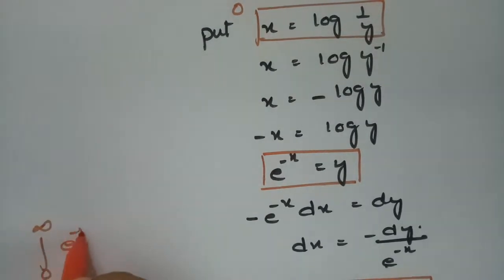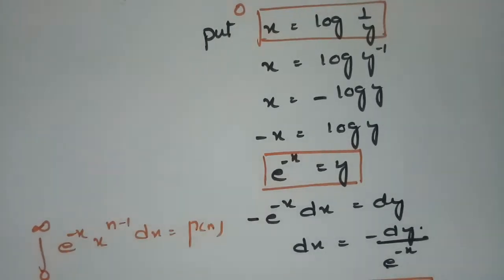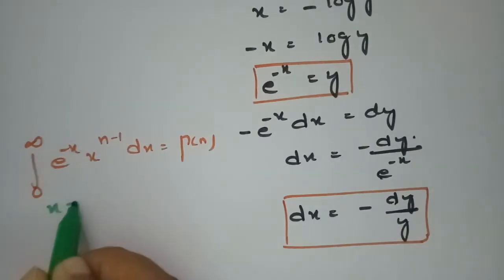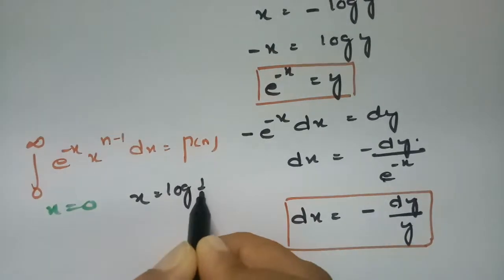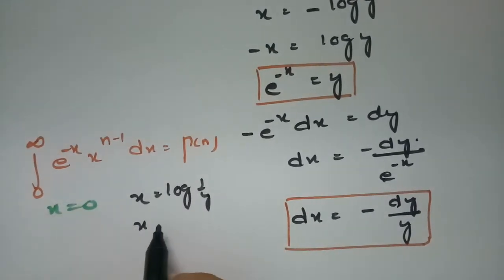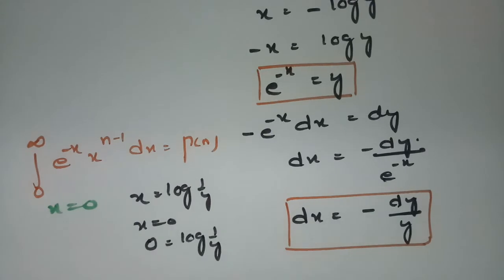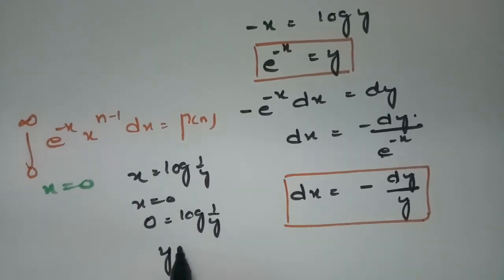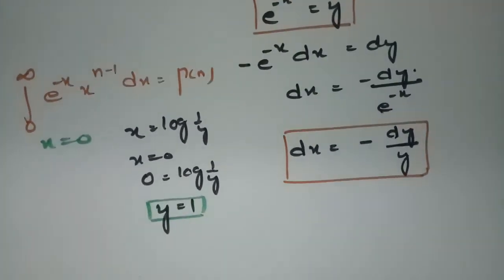In the original integral from 0 to infinity of e to the power minus x times x to the power n minus 1 dx, using the substitution x equals log(1/y): when x is equal to 0, we put 0 equals log(1/y), so y equals 1 to get log 1 equals 0.